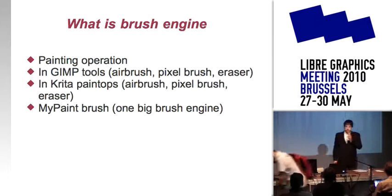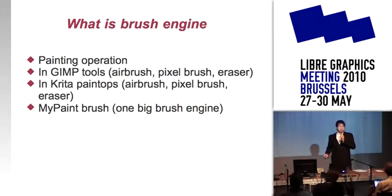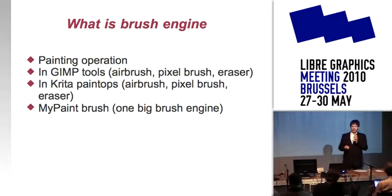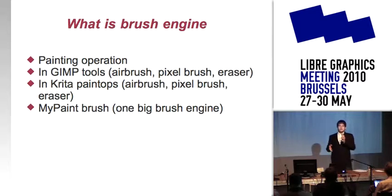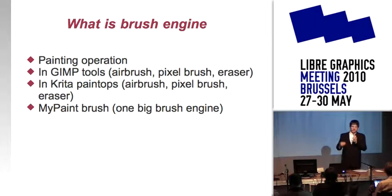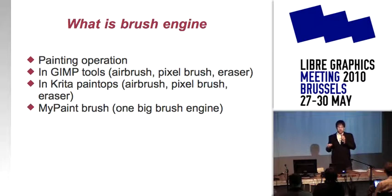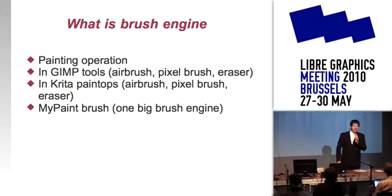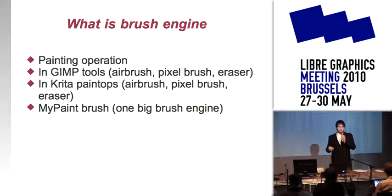So what is a brush engine? Basically, it is a painting operation. In GIMP, the user sees a brush engine as a tool — it is airbrush, or pixel brush, or eraser, or duplicate op. And in Krita, we have this kind of stuff as brush engines. So airbrush is a brush engine, but we now have spray brush instead of airbrush. Pixel brush is a brush engine. The duplicate tool from GIMP is a brush engine in Krita.